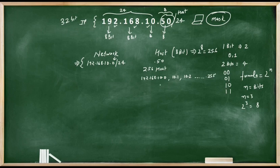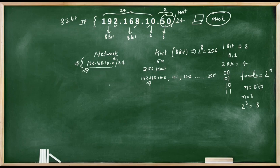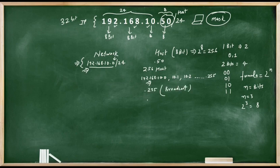We have reserved two hosts for special purposes. The first one, which is host number .0, is used for the network number — that is why the network number of 192.168.10.50/24 is 192.168.10.0/24. The second reserved host is the last one, .255, which is used as the broadcast address. So 192.168.10.255 is the broadcast address of network 192.168.10.0.